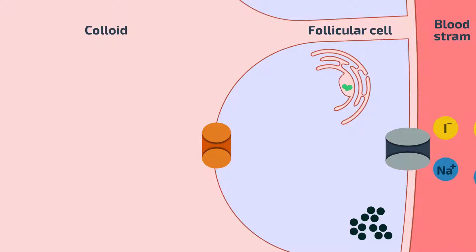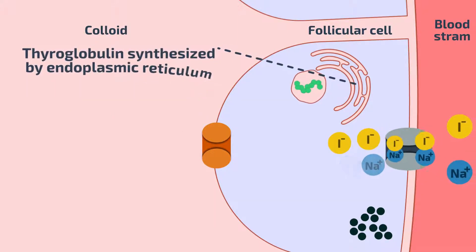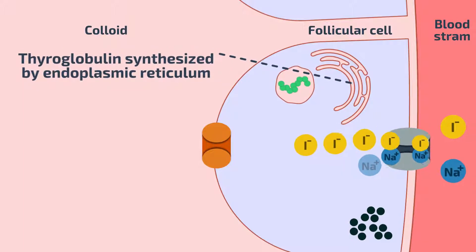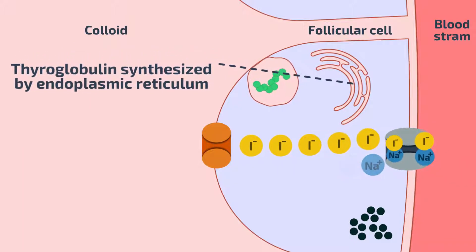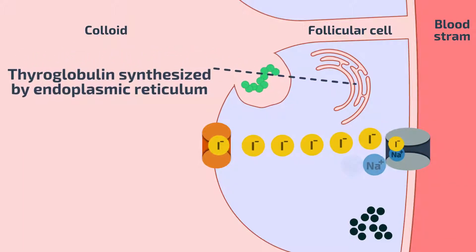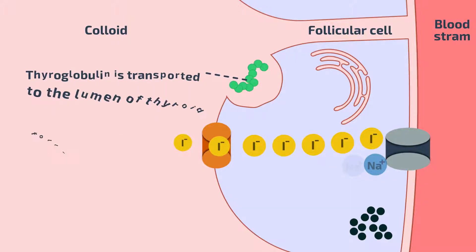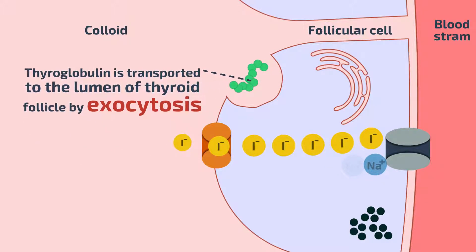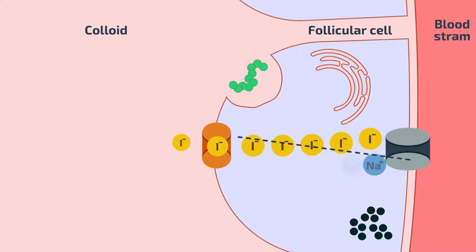The follicular cells produce a long chain protein called thyroglobulin, which is synthesized by the endoplasmic reticulum. Thyroglobulin is then secreted into the lumen by exocytosis.